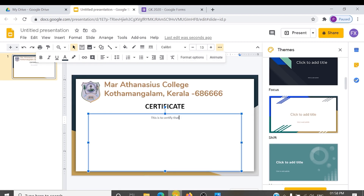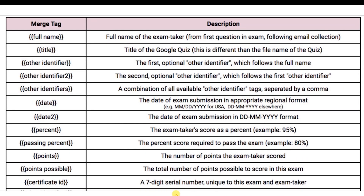The available merge tags are: full name tag, title tag, other identifier tag, other identifier two, and other identifiers. The difference between other identifier and other identifier two versus other identifiers is that if we place other identifiers, it will print both the identifiers — other identifier and other identifier two — together in a single line separated by a comma.